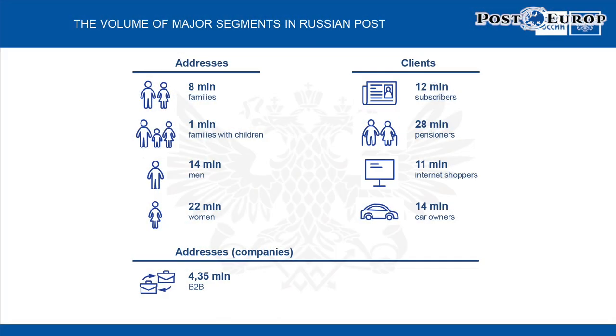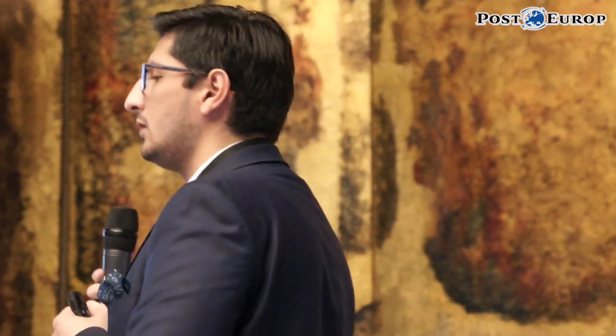Over three and a half years we have accumulated data and offered our clients many segments. For example, a company like Chico — which sells goods for kids — comes to us and says: our clients are women with income above average, they have children, and preferably have a car, etc. We analyze all these attributes and, according to geography, offer the client a targeted potential audience.